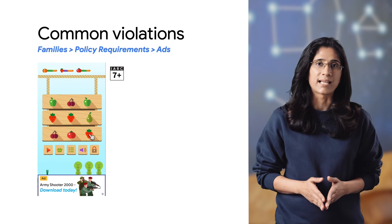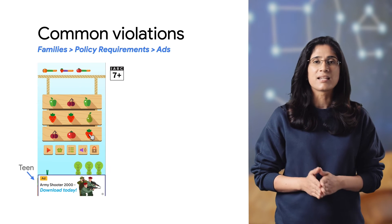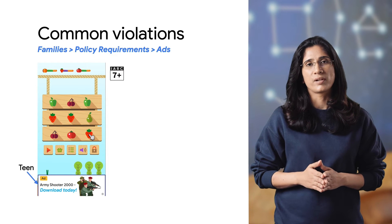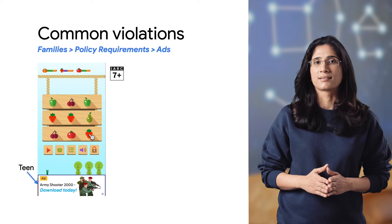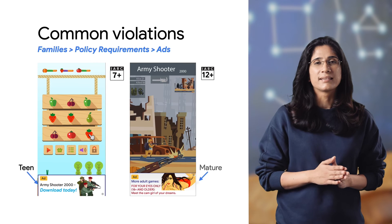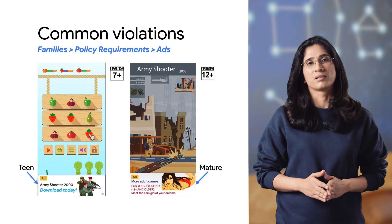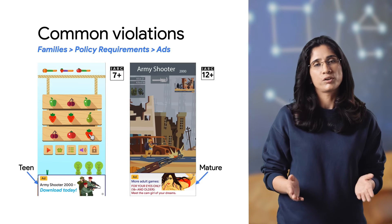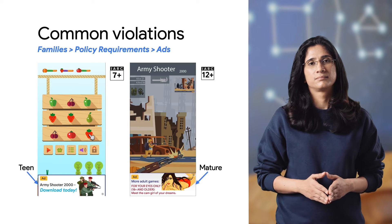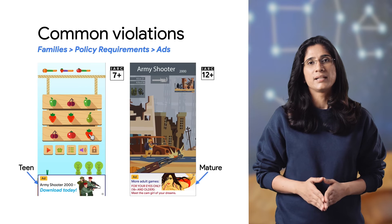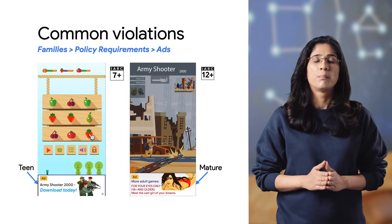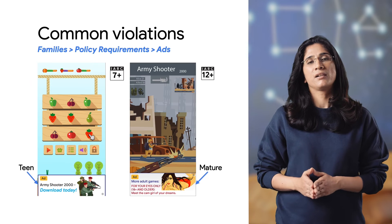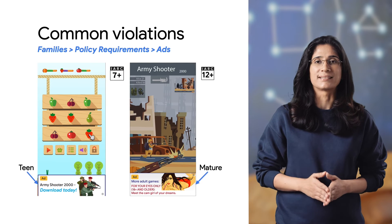Let's look at some examples. This ad is suitable for teens, but is inappropriate for the intended audience of the app, which is rated as Everyone or 7+. And this ad is suitable for mature users, but inappropriate for the intended audience of the app, which are teens or 12+. Always remember that the ads shown within your app must be appropriate for the intended audience of your app, even if the content by itself is otherwise compliant with our policies.